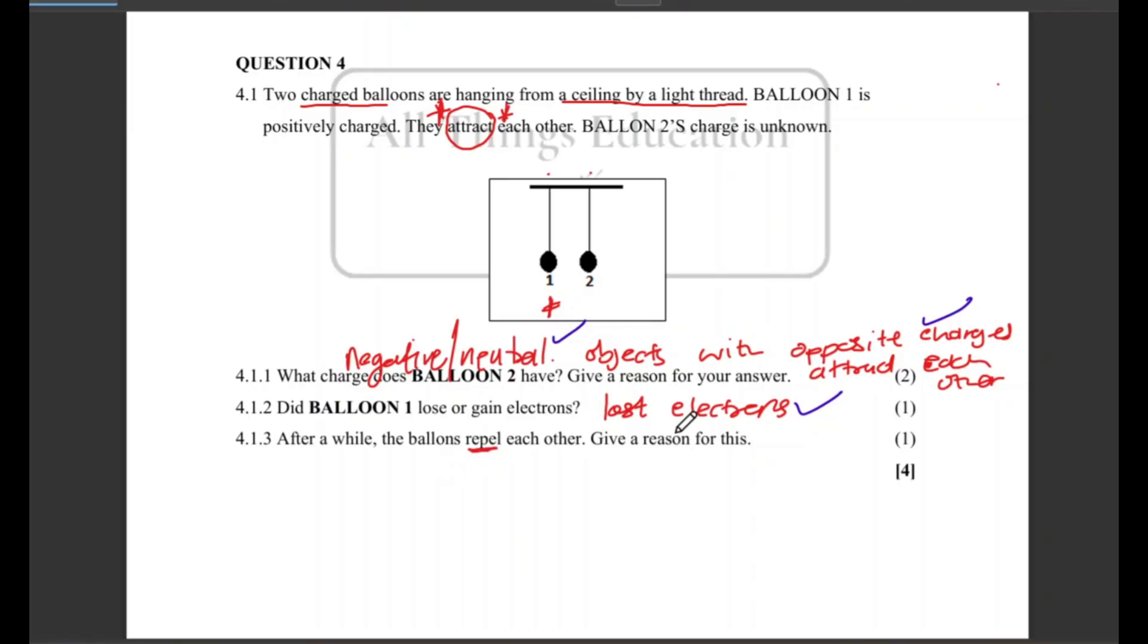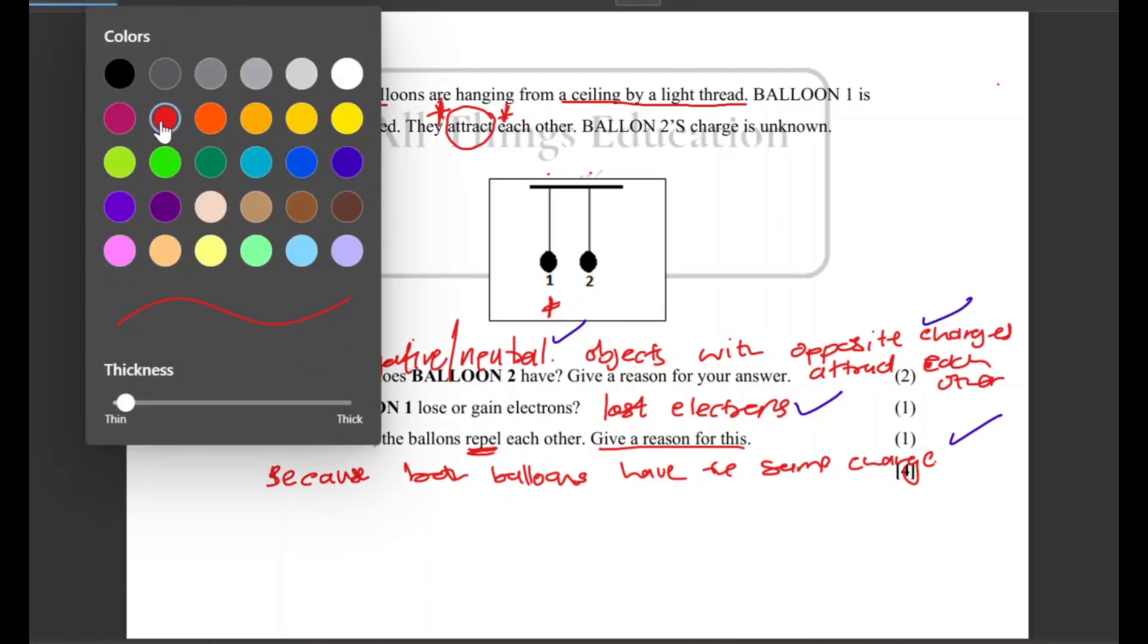Then 4.1.3: After a while the balloons repel each other, give a reason for this. Guys, during contact the electrons are going to be shared between the balloons. So they will then end up gaining the same charge and because both of them have the same charge, they are going to repel. So the answer for one mark here will be because both balloons have the same charge or type of charge.